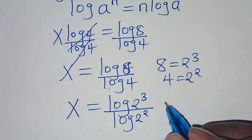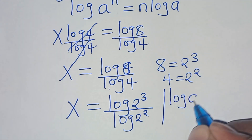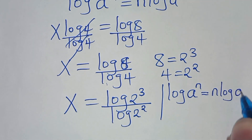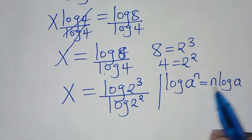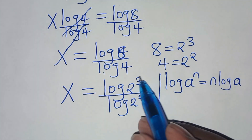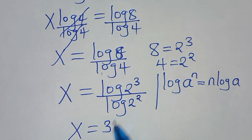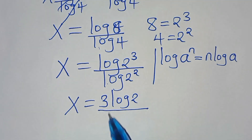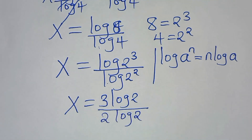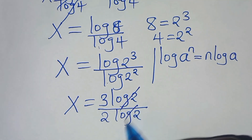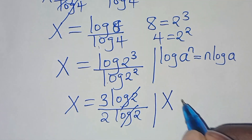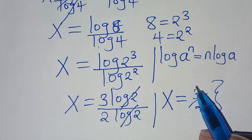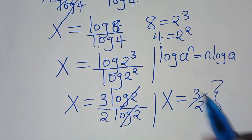Applying the power rule property, log 2 to the power of 3 becomes 3 log 2, and log 2 to the power of 2 becomes 2 log 2. The log 2 terms cancel, so we have x equals 3 over 2. Applying both method 1 and method 2 yields the same value of x.